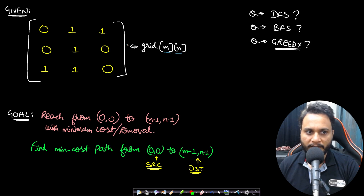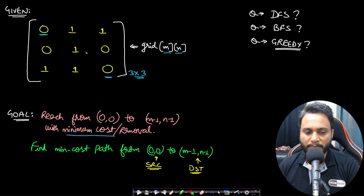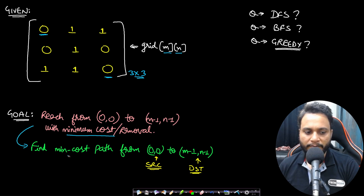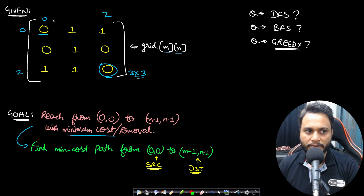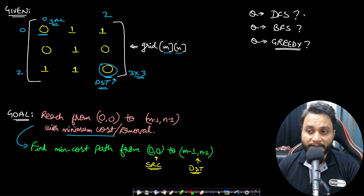Let's look at an example with a 3 by 3 matrix. Zero means empty and one means an obstacle. Our goal is to reach from index 0,0 to index m-1, n-1 — the bottom-right — with the minimum number of obstacle removals. Since one removal costs one unit, I can reframe this as: find the minimum cost path from index 0,0 to index 2,2, where the top-left is the source and the bottom-right is the destination.